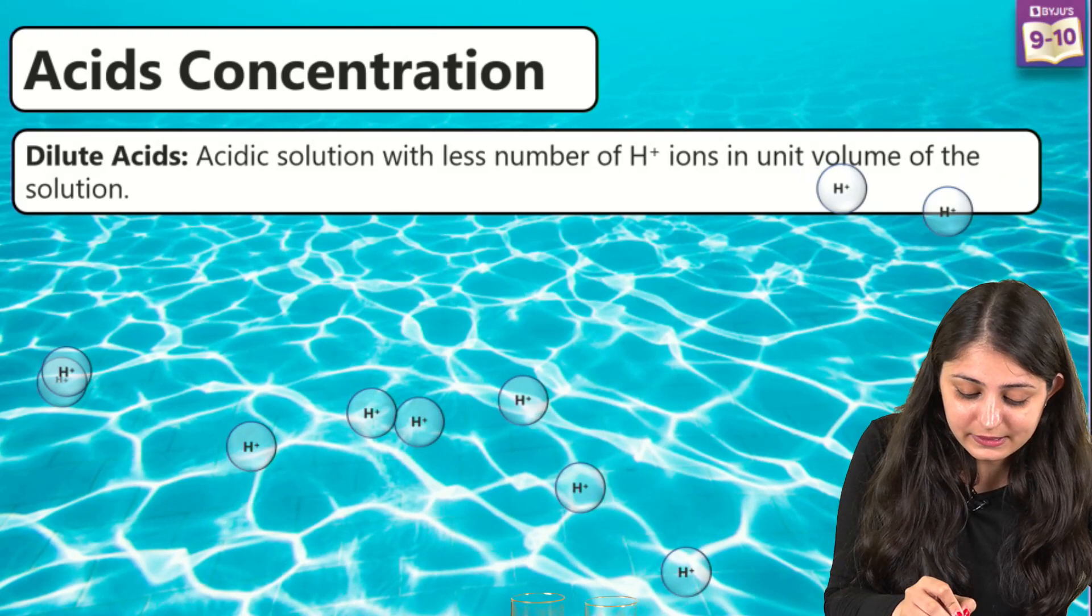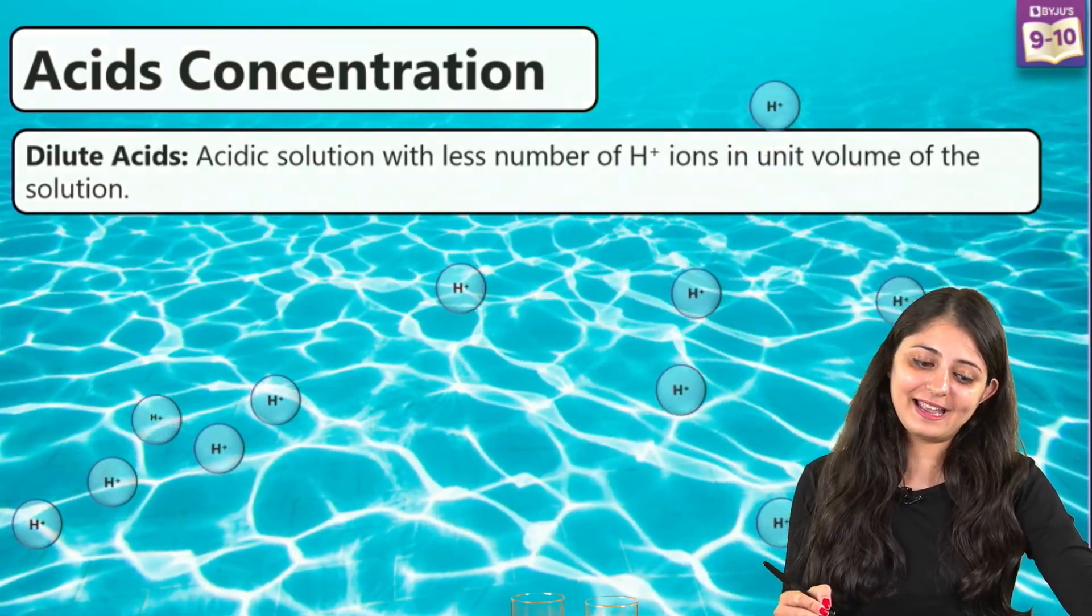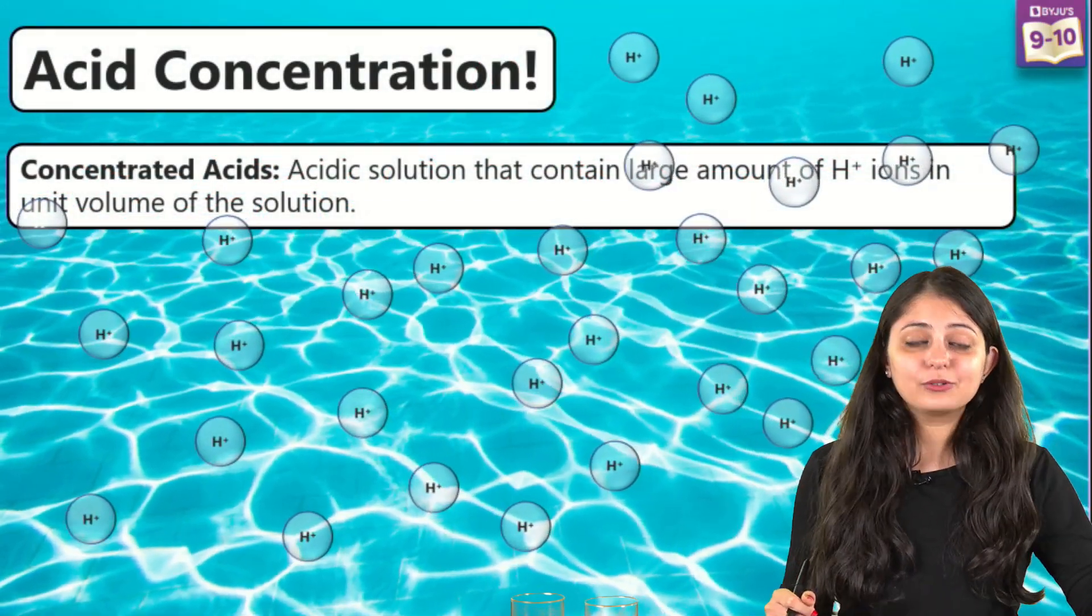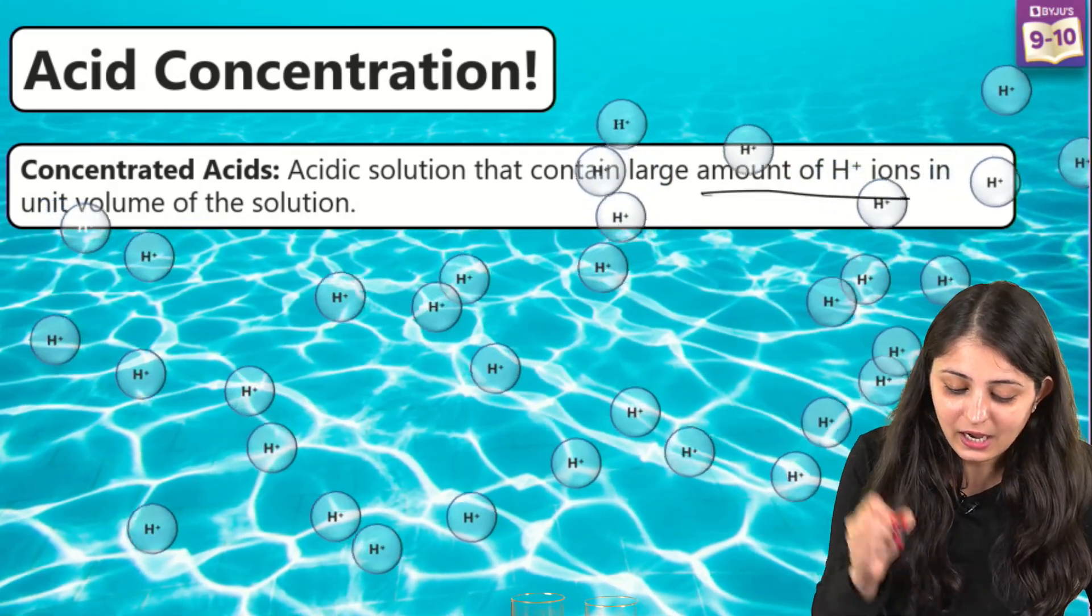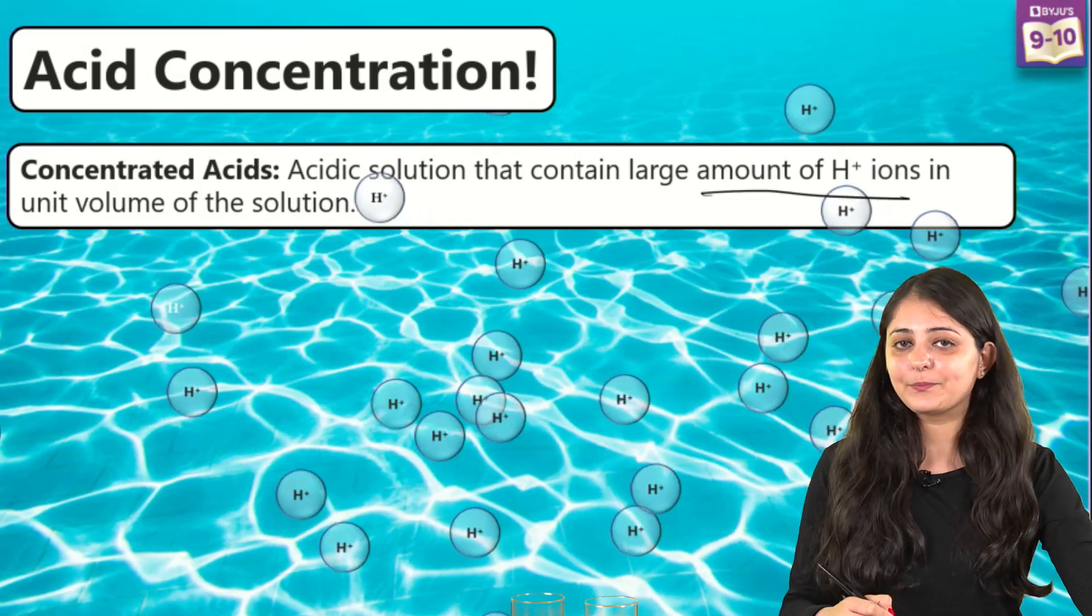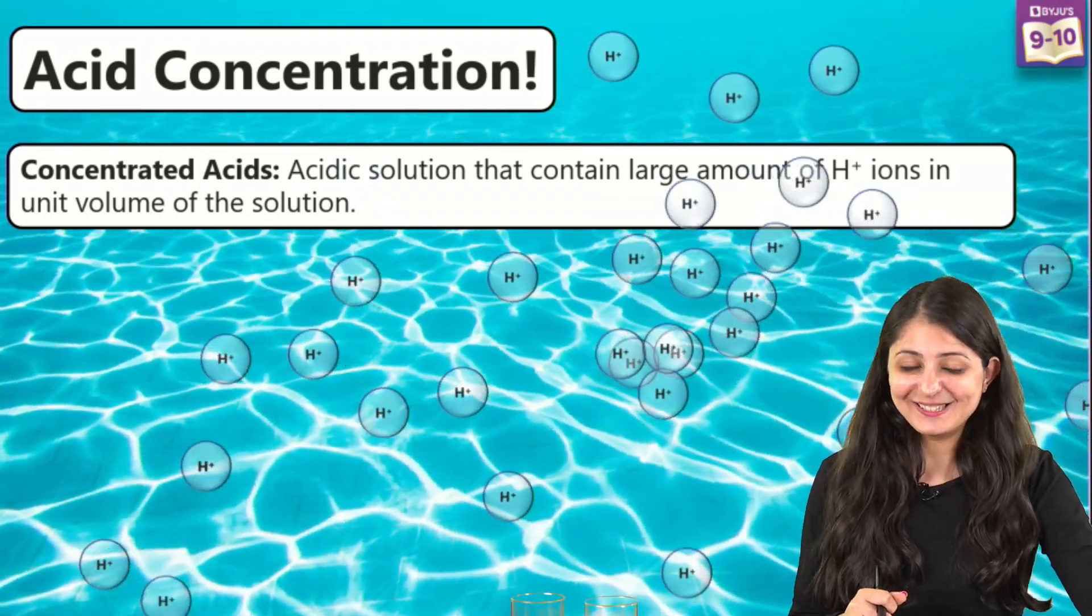Now you would know what dilute acids are. These are the acidic solutions with less number of H+ ions in unit volume of solution. And concentrated acids are just the opposite - solutions that contain large amount of H+ ions in unit volume of the solution.